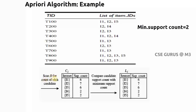The first step is to scan the database for the count of each candidate. There are five products: I1, I2, I3, I4, I5. Scan the database to find the count of each item — we call this the support count. For I1, the count is six; I2 is seven; I3 is six; I4 is two; I5 is two. This is called C1.